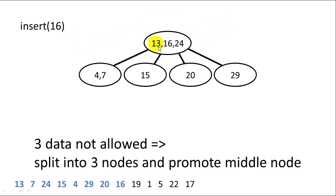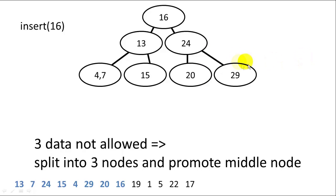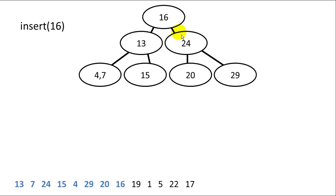However, we now have 3 values in the root node, and only 2 are allowed. So we promote the middle node, 16, spinning it off to a new node with 13 and 24 as its children, and reattach the respective child subtrees. Now we have a balanced tree again with 16 as the new root. In this case we had a series of 2 splits — we inserted into a leaf, promoted a value up, then had 3 values again and promoted again. As the tree gets larger, splits may trickle all the way up. The tree grows taller by growing up, not down.